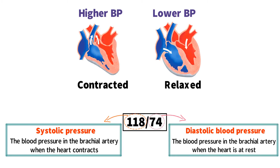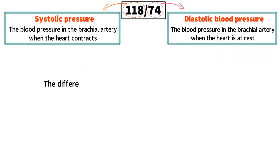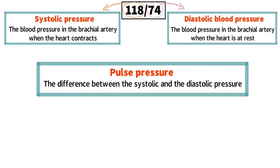It is important to point out that pressure has units of millimeters of mercury. However, in blood pressure readings, the units of mmHg are often not stated, and the reading is simply expressed as 118 over 74. The difference between systolic and diastolic pressure is known as the pulse pressure. In this example of 118 over 74, the pulse pressure would be calculated by subtracting 74 from 118: 118 minus 74 equals 44.